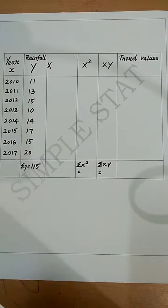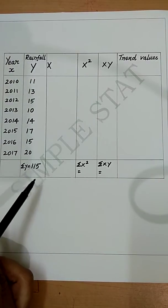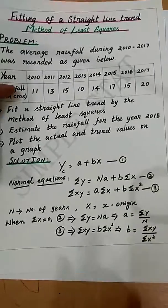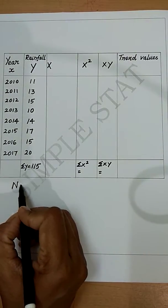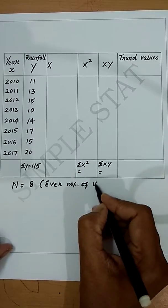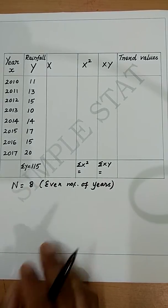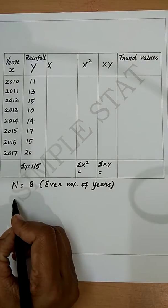Let us now proceed with the calculation. First, write the given year as x and the rainfall in centimeters as y, finding the total. For X = x minus origin, here n = 8, meaning we have an even number of years. We take the average of the 4th and 5th years as the origin, which gives origin = 2013.5.